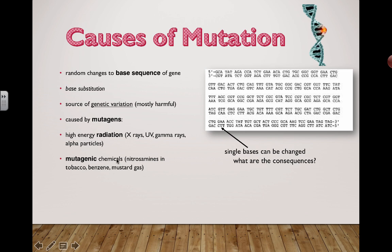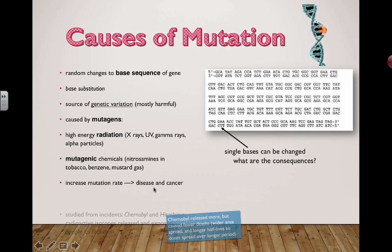There are other types of mutagens, specifically mutagenic chemicals. Think of all the things you've heard of that can possibly cause cancer — these all fall into a category of mutagenic chemicals or carcinogens. In tobacco, people who smoke cigarettes, exposure to chemicals called nitrosamines has been shown to actually cause mutations and base sequence substitutions. Benzene is another chemical, as is mustard gas, which used to be used in warfare. So increases in mutation rate can lead to disease and cancer.